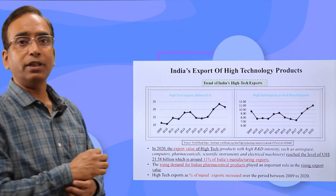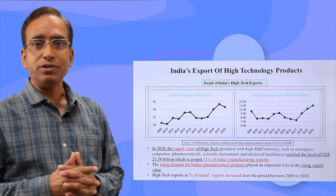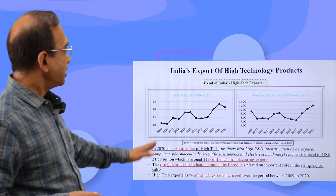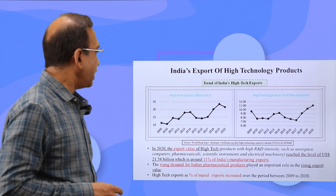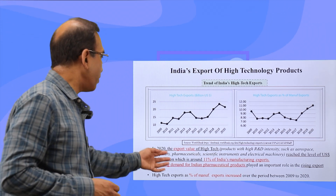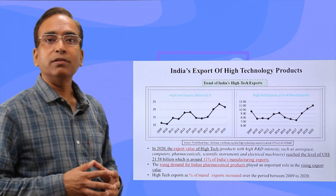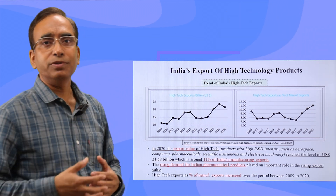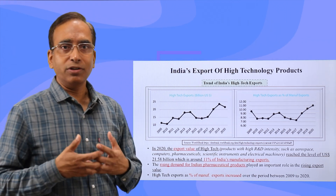This section is about the export of high-tech products. Despite India not investing so much in R&D, as we saw in the last slide, both tables show a significant rise in high-tech exports in recent years. In 2020, the export value of high-tech products reached US $21.5 billion, which is around 11% of India's manufacturing exports. That means with less investment, we are able to improve our export positioning in the world — that's possibly one of the hallmarks of India's technological progress.